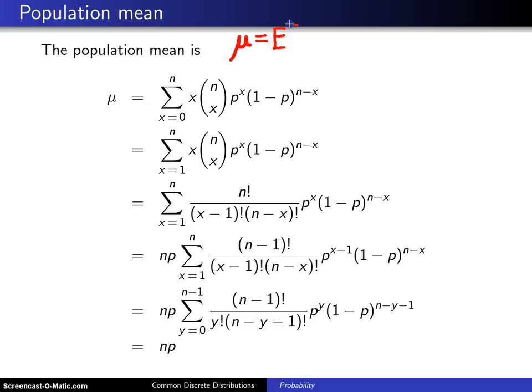We're going to use the original formula, the defining formula for μ which is the expected value of x. For a discrete distribution that will be the sum over the support of x times f(x) and that is what we're going to use here. So the support for a binomial random variable runs from zero to n and we have x multiplied by f(x) and that gives you the first step.